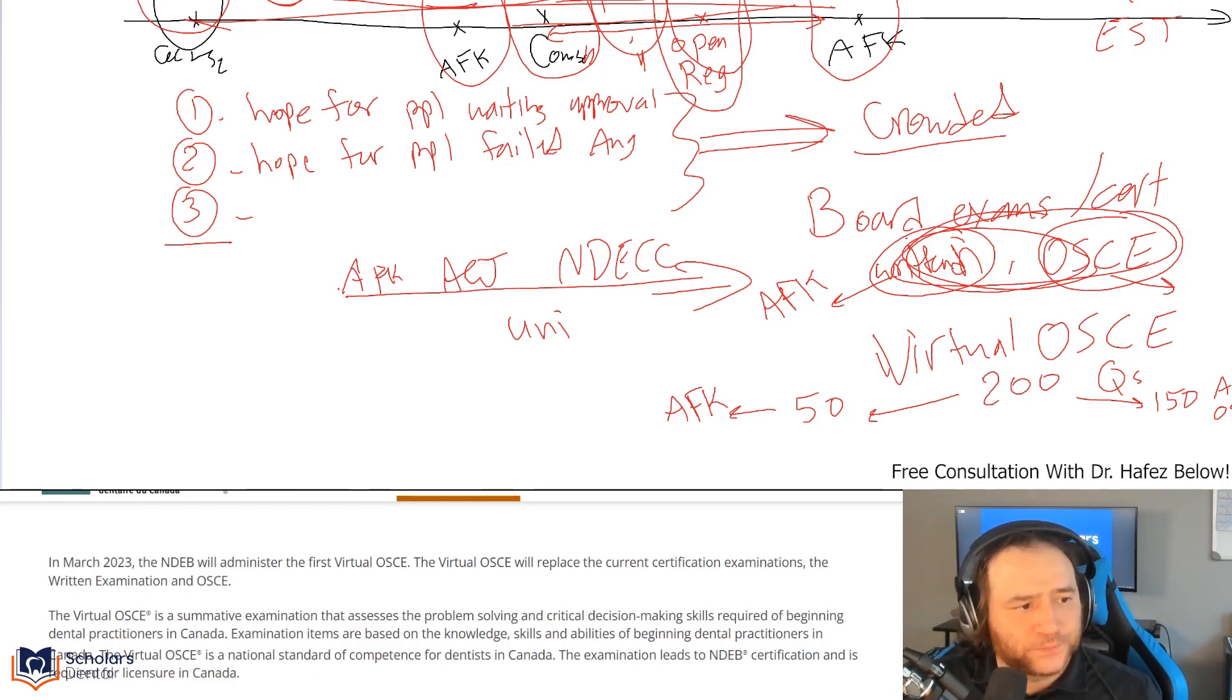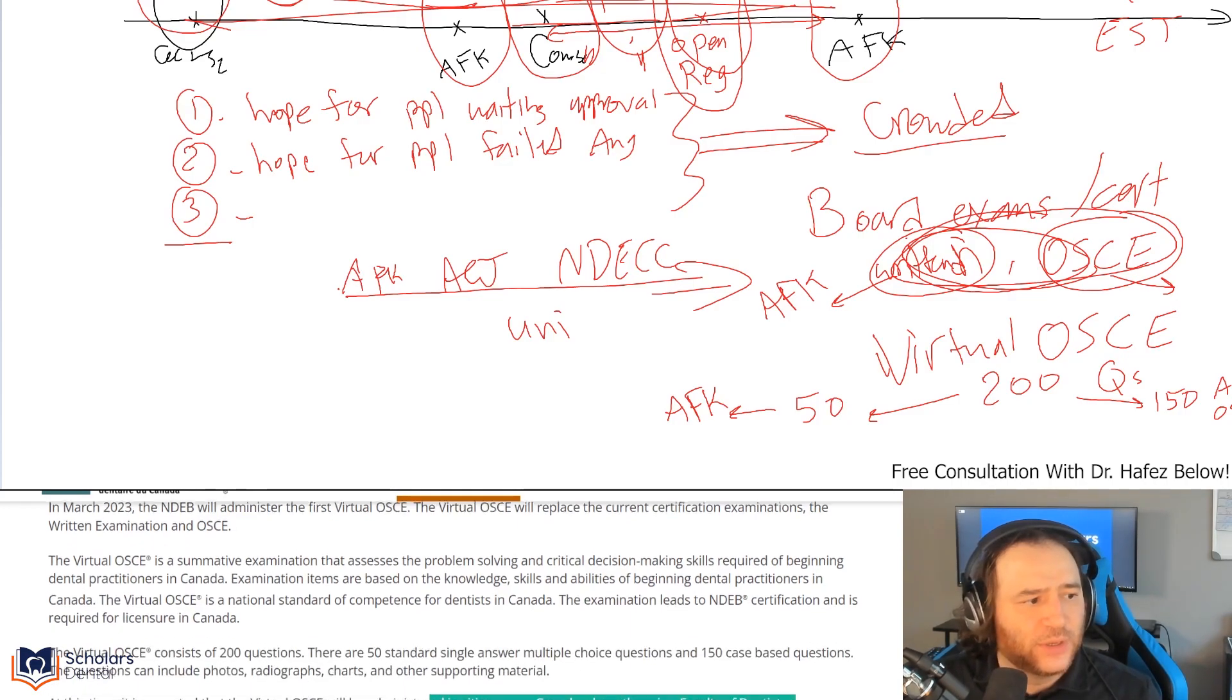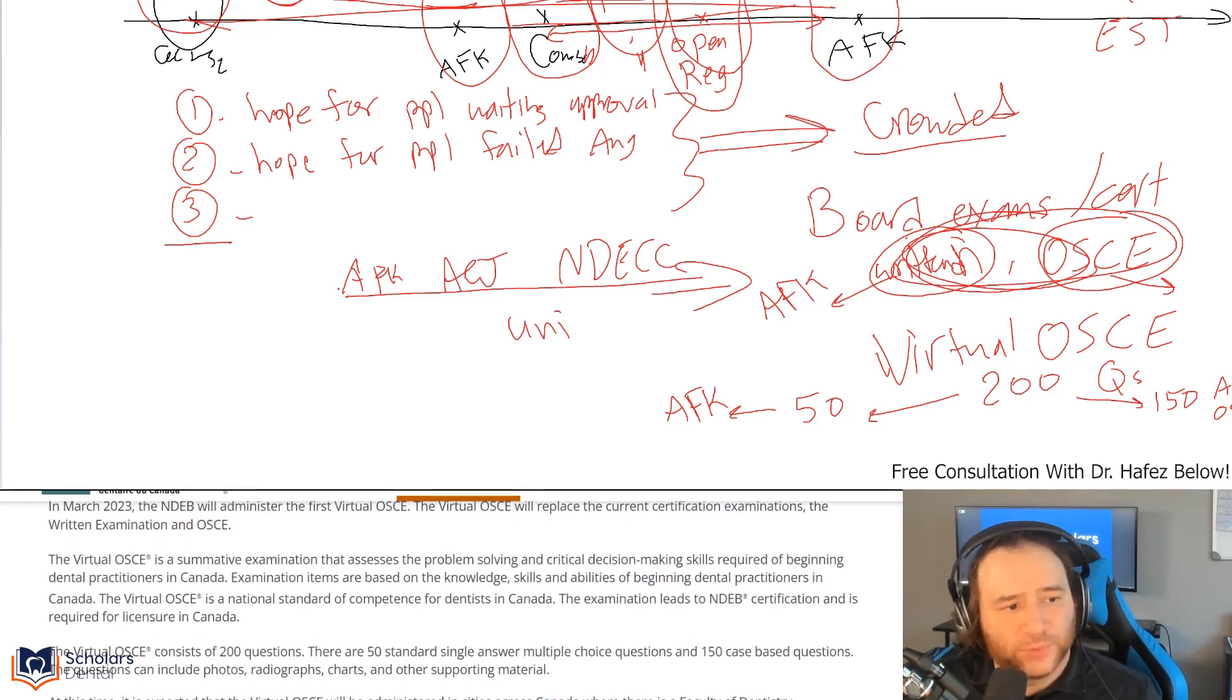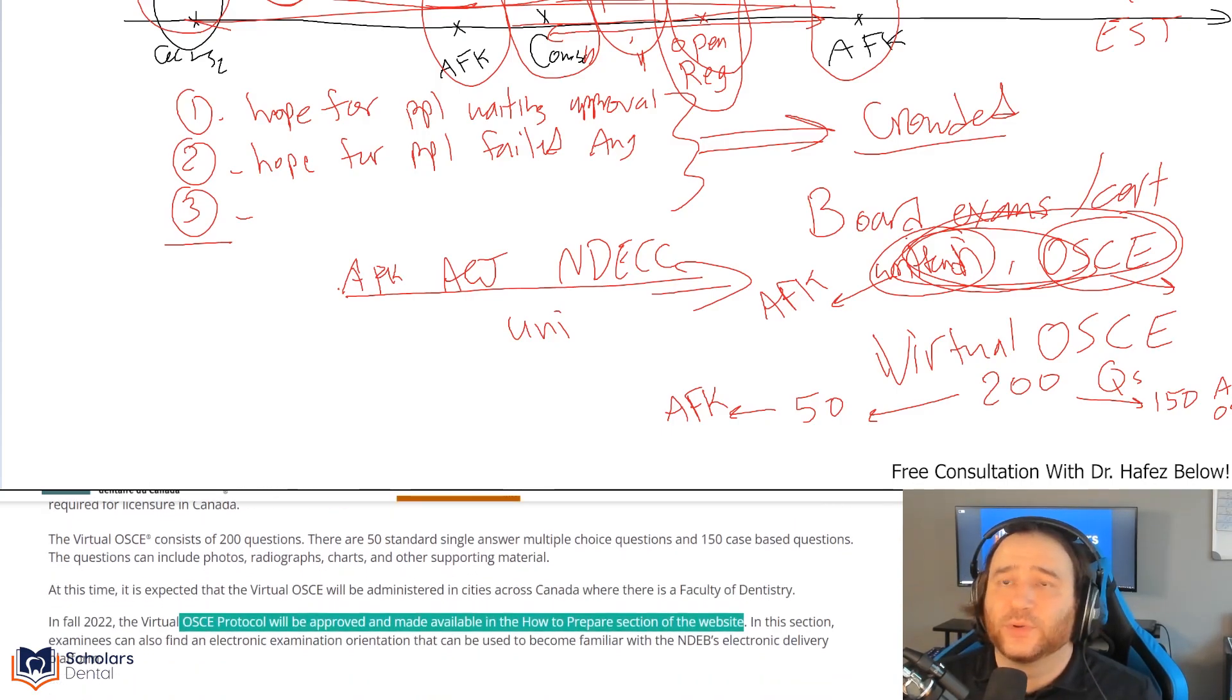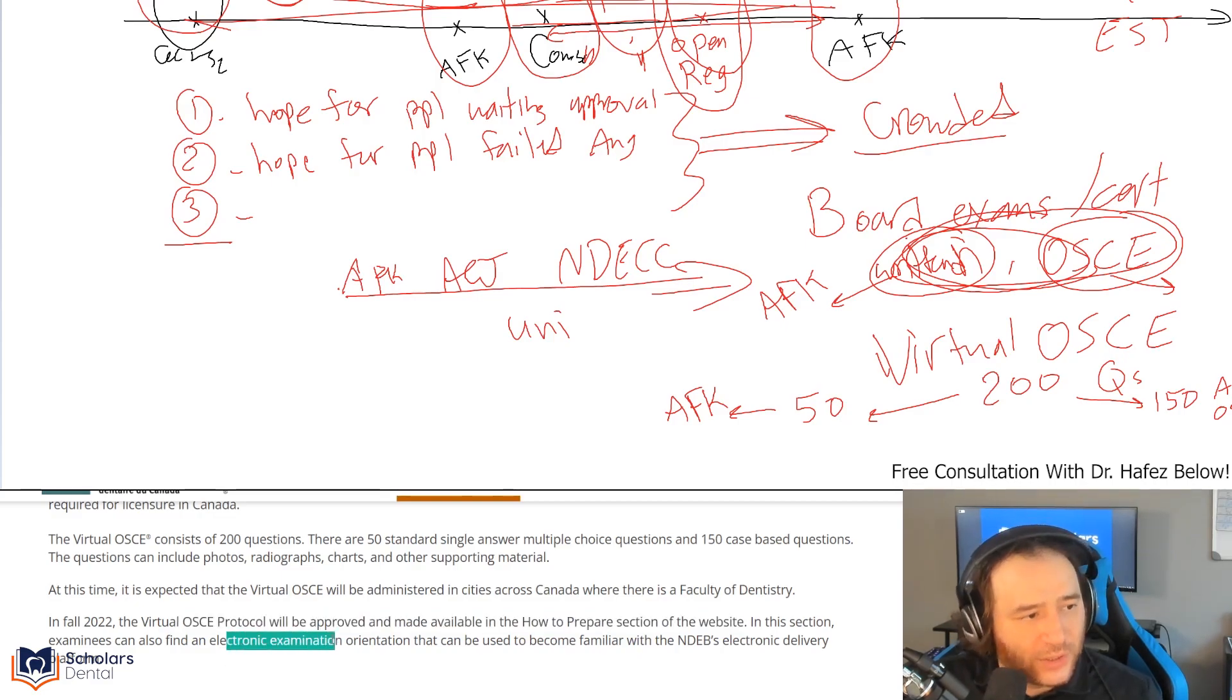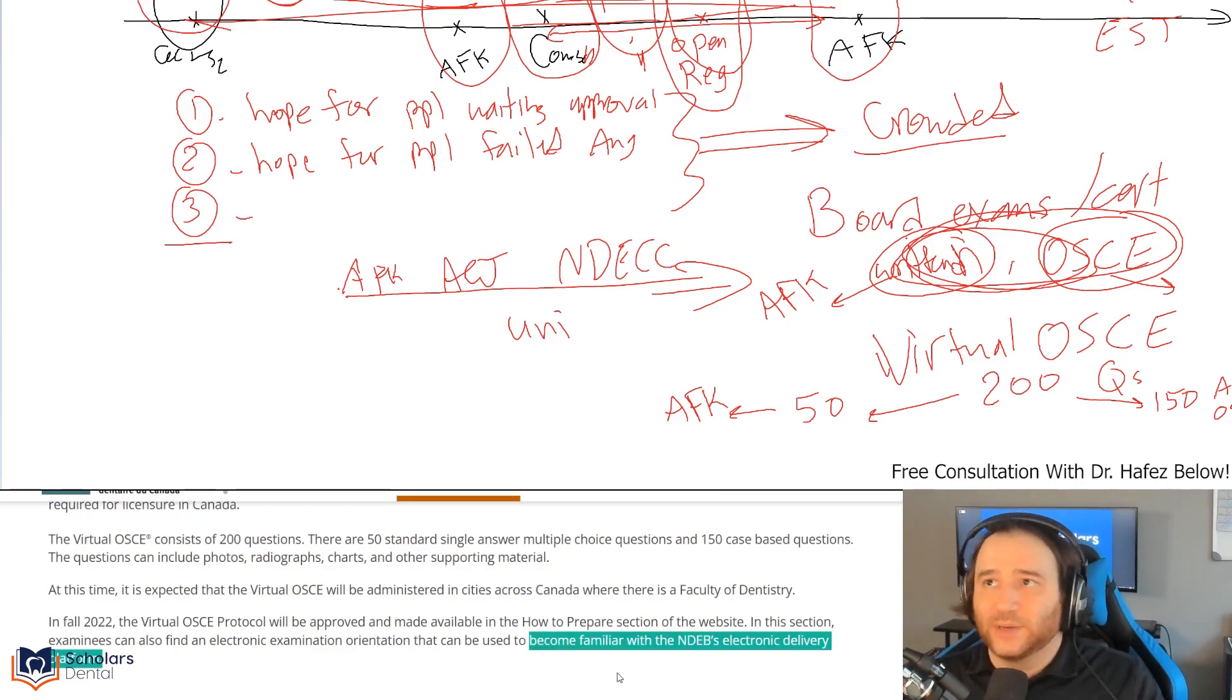It will be administered in cities across Canada where there is a faculty of dentistry. Examinees can also find an electronic examination orientation to become familiar with the NDEB's electronic delivery platform. That means you're not going to need to look at models anymore. You don't have to look at things physically to assess a restoration or anything like that. It's going to be virtual, electronic, closer to how an ACJ is delivered.